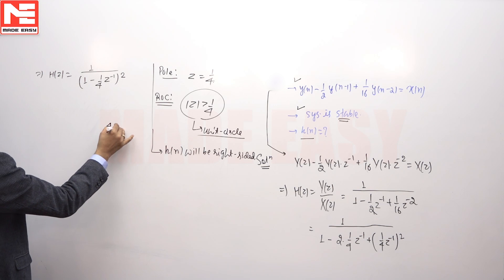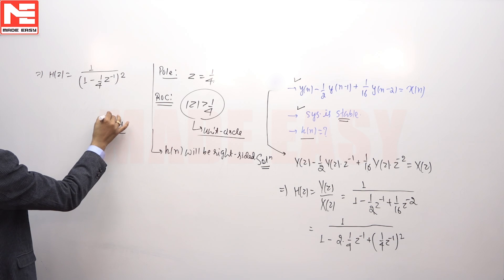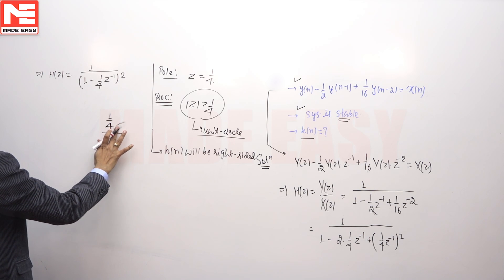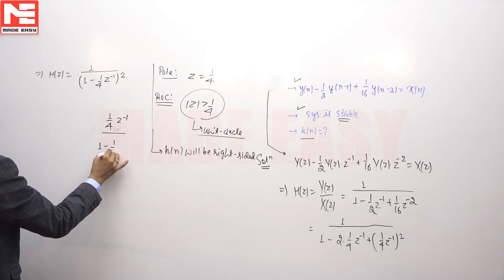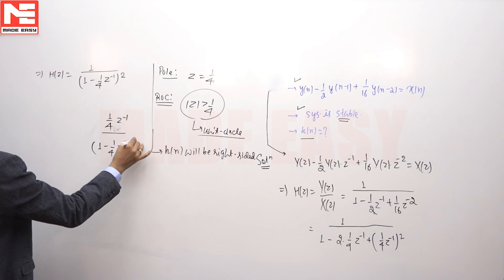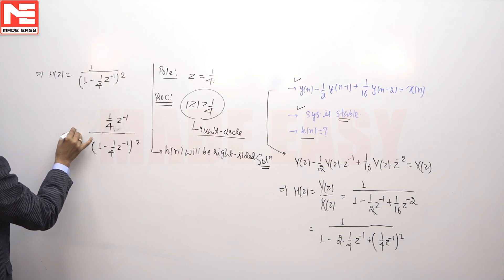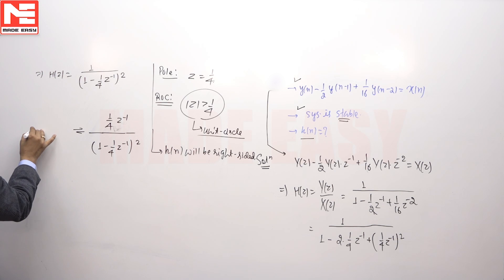As we know, for the term 1 upon (1 minus 1/4 z inverse) whole square, the right-sided inverse is n times (1/4) raised to n times u(n).